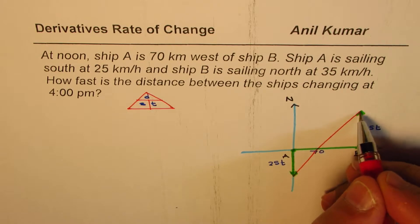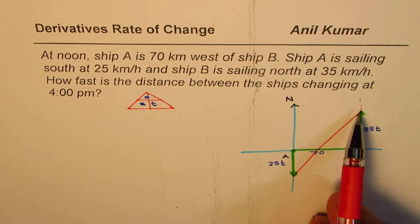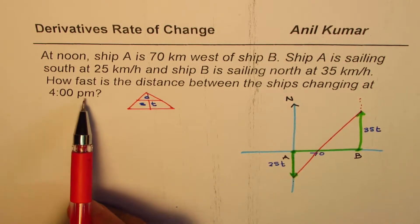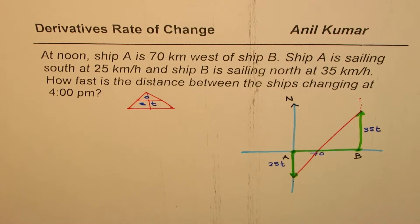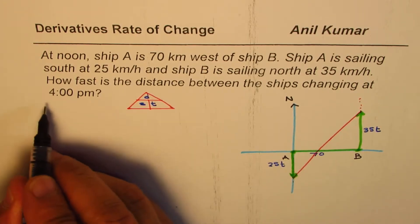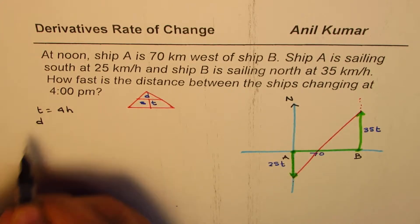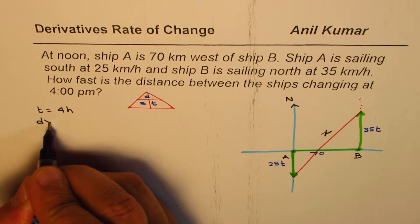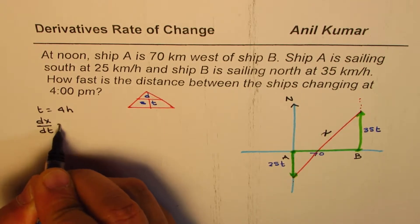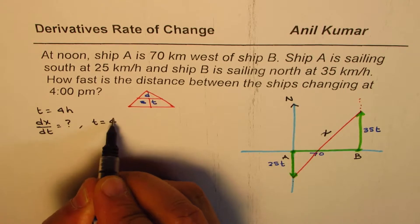As time moves, the ships will move further away and that distance is going to increase. We need to find the rate of change of this distance when it is 4 p.m. Since they started at noon, we have to find the rate of change of this distance when the time is 4 p.m., meaning change in time T is 4 hours. We need to find change in distance. Let us say that this distance is x. In that case, we need to find rate of change of distance at T equals 4. That is the question for us.